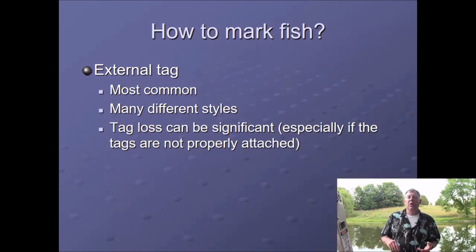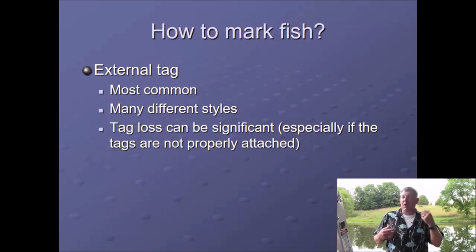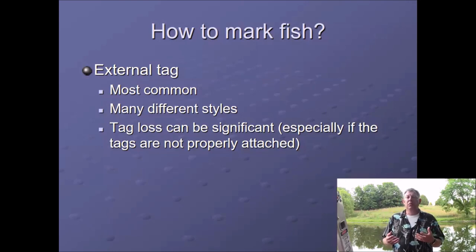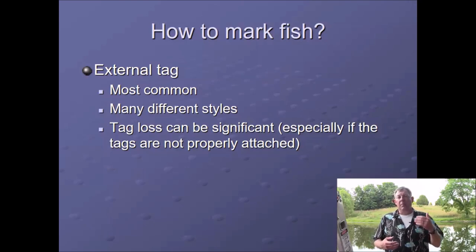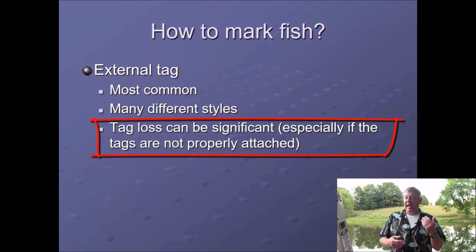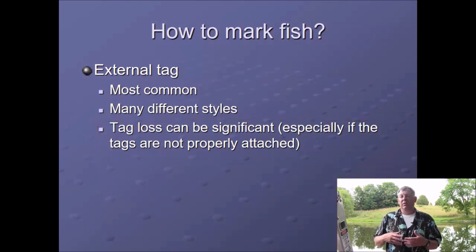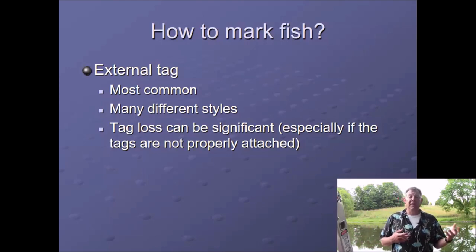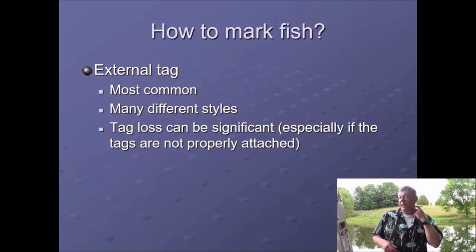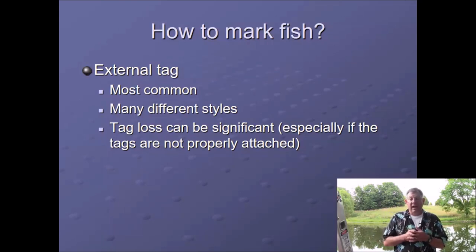The most common way to mark fish is with an external tag — something clipped on that hangs off the outside of the fish. There are tons of different ways to do this, and a lot of research goes into which ones work best and affect the fish the least. A big thing we look at with external tags is tag retention. Tag loss can be significant. A lot of times you'll have an estimate for how much tag loss you're going to have, so you can adjust your numbers based on that estimated tag loss, since these things hanging off the outside of the fish can get rubbed off.